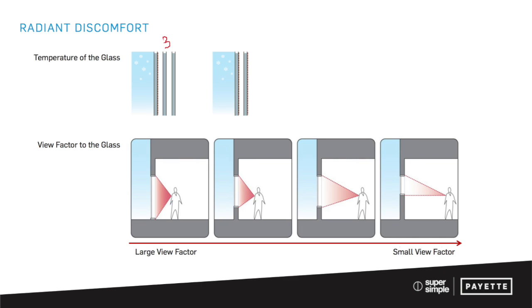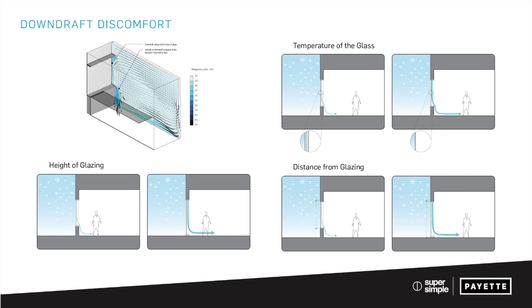The other factor is what we call the View Factor (V factor) — how much of your body's field of view is that glass occupying. If it's a really big window and you're standing really close to it, like your studio desk is right next to a floor-to-ceiling piece of glass, you're going to have a very big V factor. If you're in an old building with punched windows and you're three desks in, you're going to have a very small V factor because the glass is a very small percentage of what you're seeing. So the smaller the window and the further away you are will impact whether or not it makes you uncomfortable.